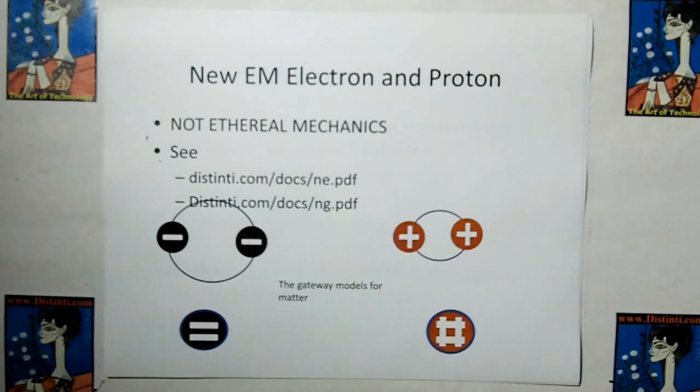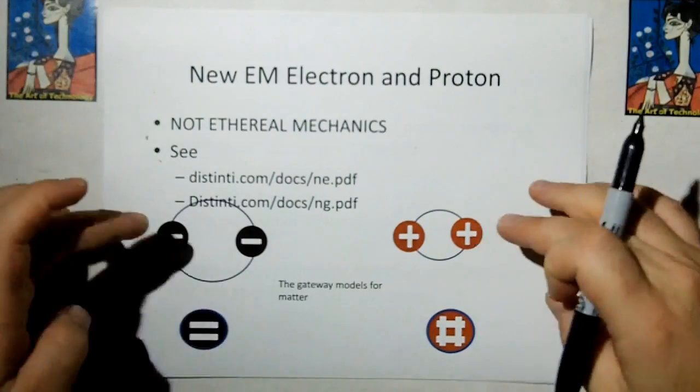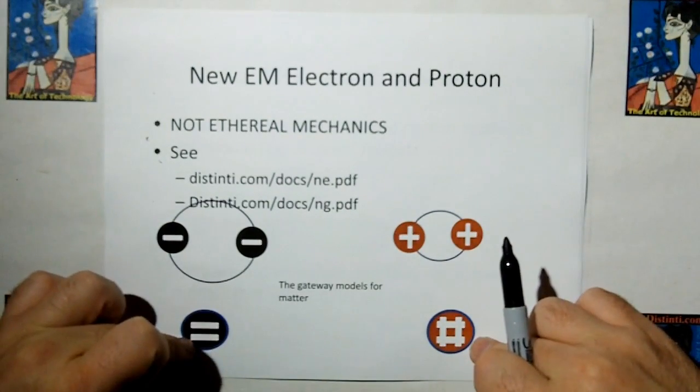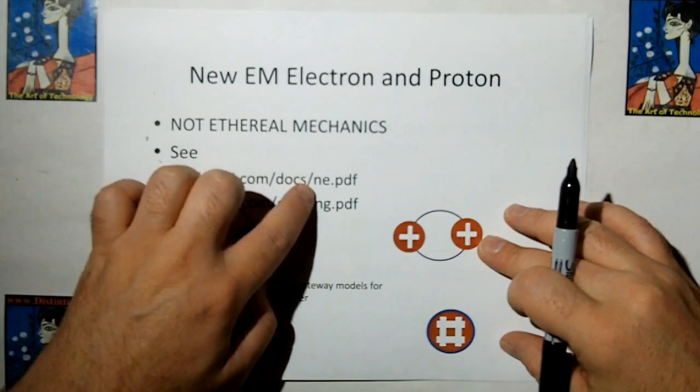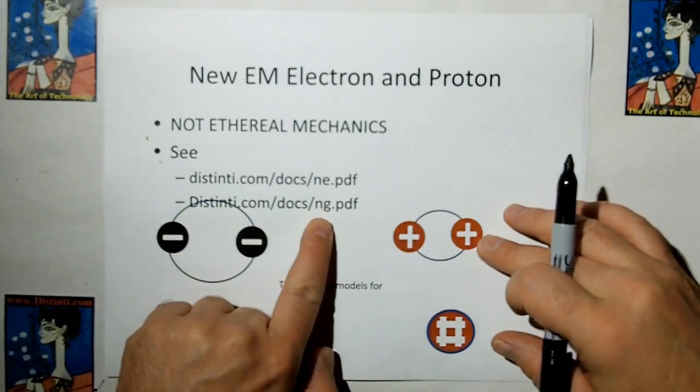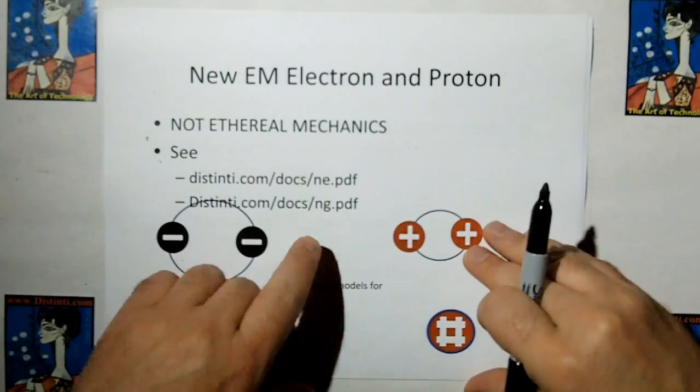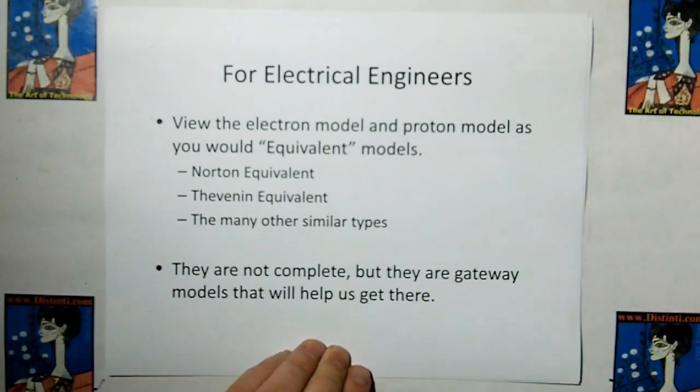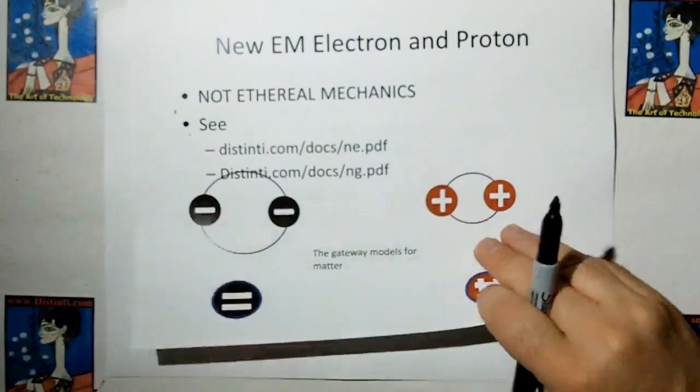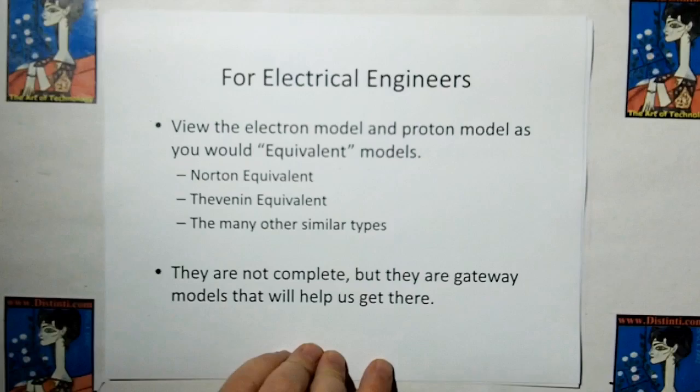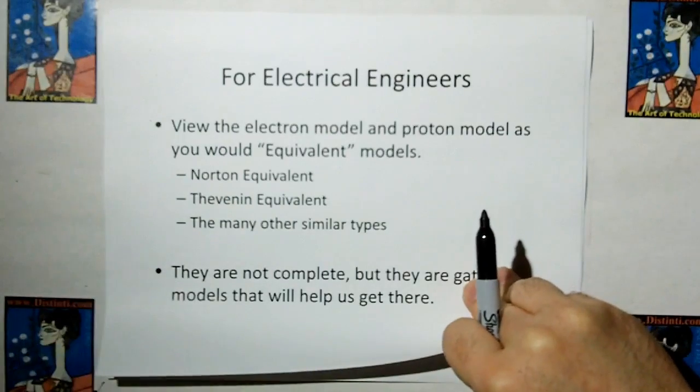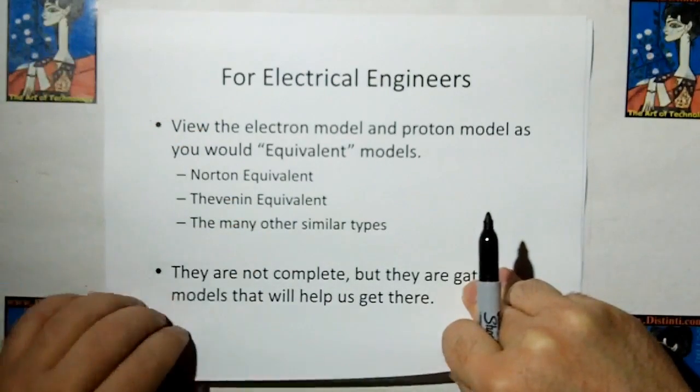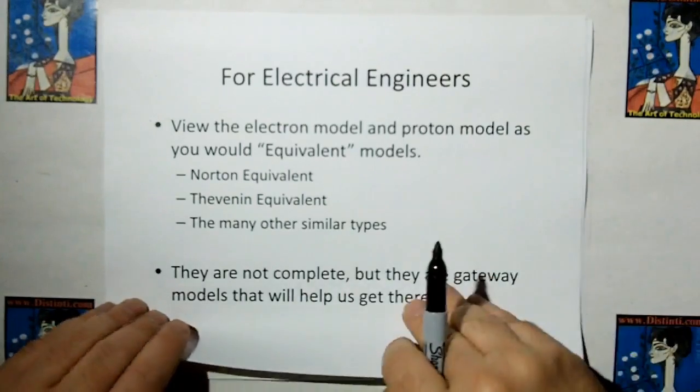The other models we're going to are the new electromagnetism, electron, and proton. These are not the ethereal mechanics models, but these are going to be the gateways to the ethereal mechanic models. And if you want to see the derivation of these, you go to my website in the doc subdirectory, which is browsable. There's one for ne.pdf, and the mass models go into newgravity.pdf. For electrical engineers, you should view these like equivalent models. In other words, like the same models, like Norton equivalent or the Thevenin equivalent or many other things that electrical engineers are used to using to get answers even though they don't have the real thing in front of them. They're not complete, but they are gateway models that will help us get there.